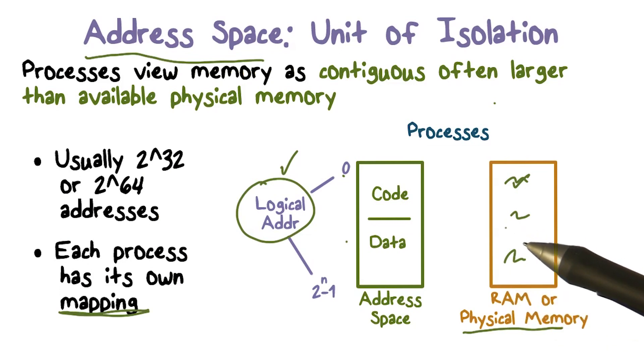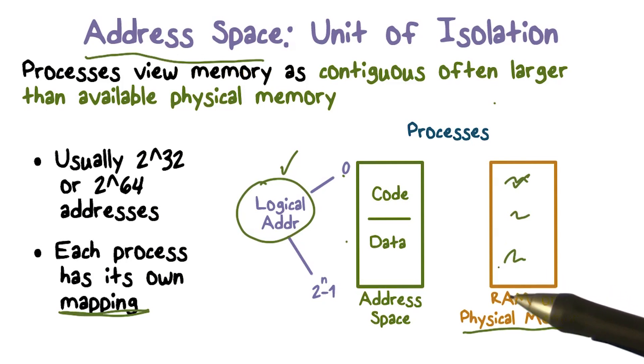When process B is running, it should be able to go to only those parts that are currently allocated to it. And they never run into each other unless they choose to share, which is always sort of an exception.